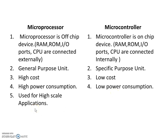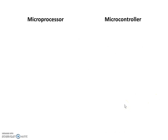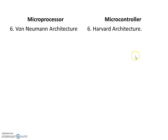Microprocessors are used in high scale applications and microcontrollers are used in low scale applications. The architecture used in microprocessors is the von Neumann architecture, and the architecture used in microcontrollers is the Harvard architecture.